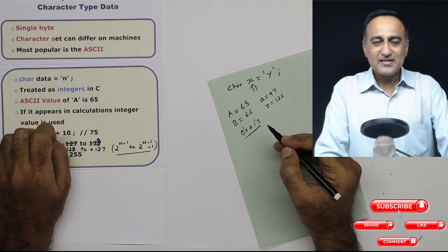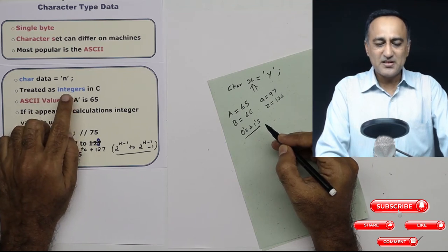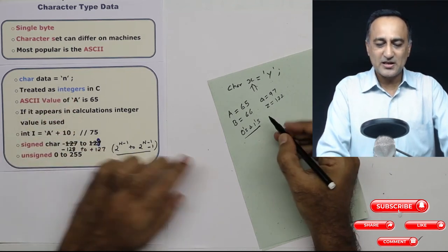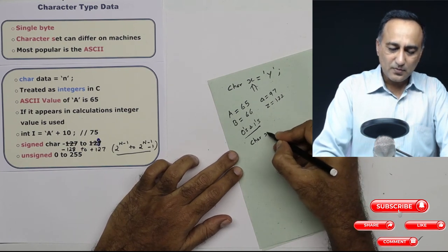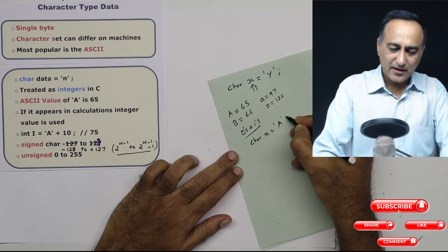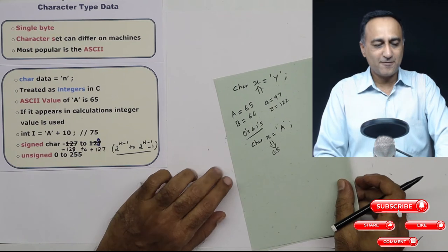Basically, in C, characters are simply treated as integers. That means instead of n, you can think of it as a number. So suppose I had given char x is equal to character a, you can think of char containing the integer value 65.